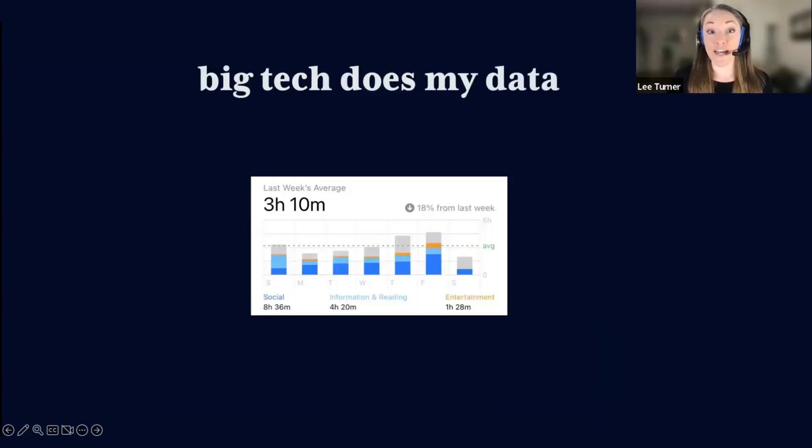Information design is also called data visualization. What you see here is my phone usage data generated by Apple and undoubtedly available for surveillance and sale. Our data is a literal commodity. Numbers can obfuscate our humanity or numbers can make us more human.